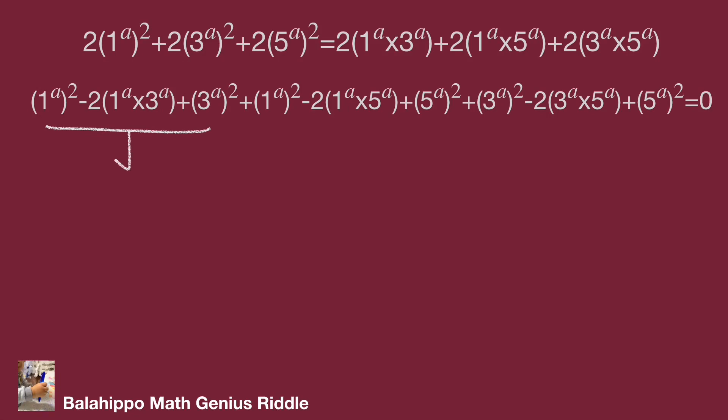The new equation become quantity 1 power of a minus 3 power of a square plus 1 power of a minus 5 power of a square plus 3 power of a minus 5 power of a square equal to 0.